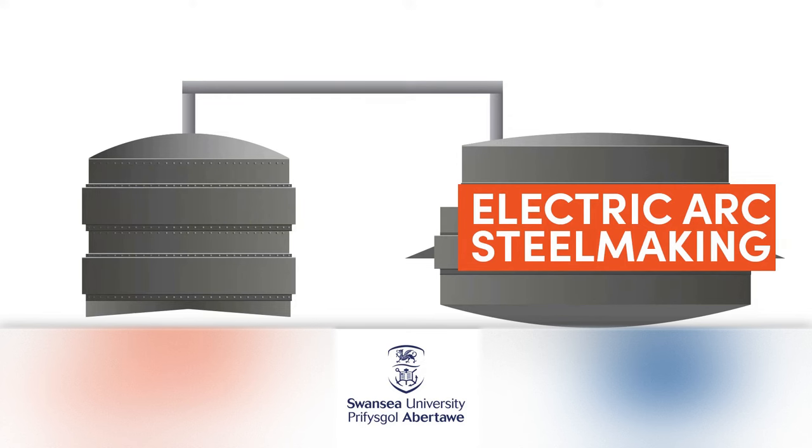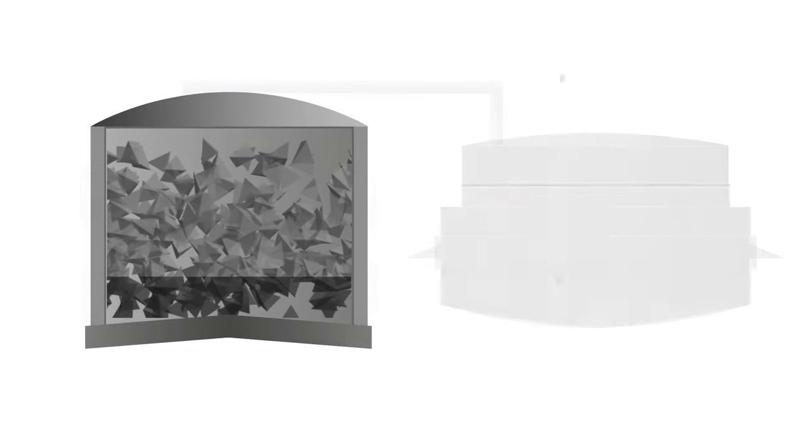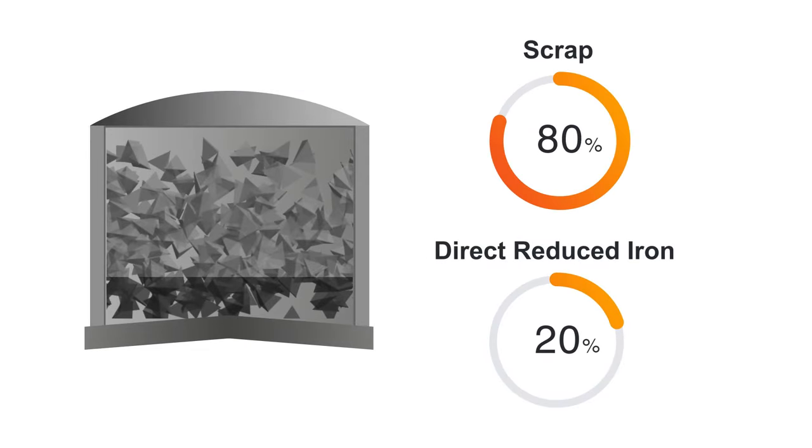In traditional electric arc steelmaking, the charge typically consists of 80% scrap and 20% direct reduced iron, with the direct reduced iron derived from coal or natural gas reduction.